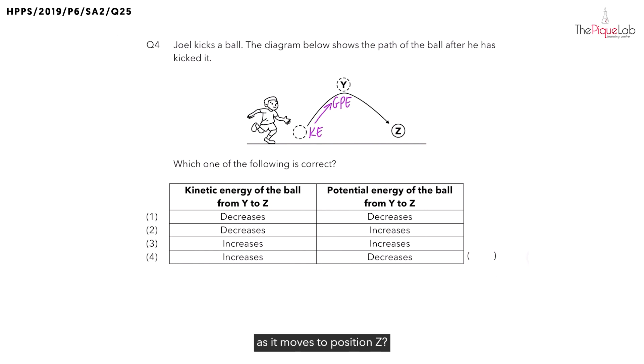And what is the energy possessed by the ball as it moves to position Z? The ball will possess kinetic energy. So the GPE is converted to kinetic energy. Now that we've written the energy conversion of the ball, we can identify the correct change.